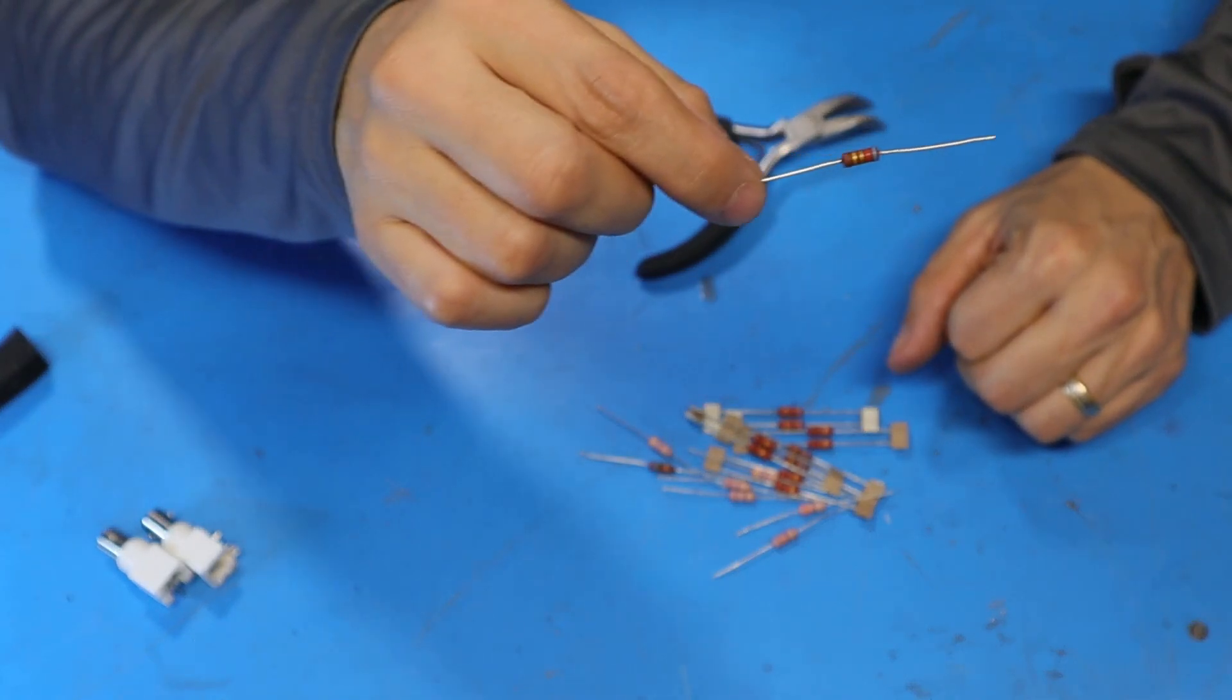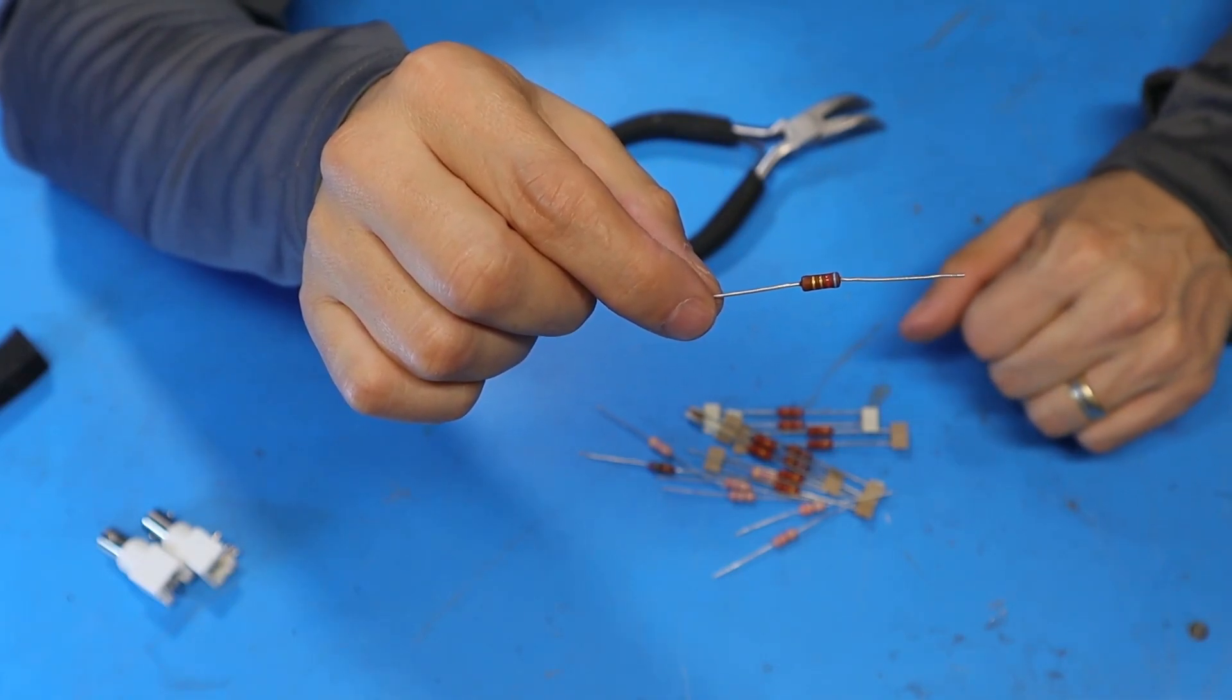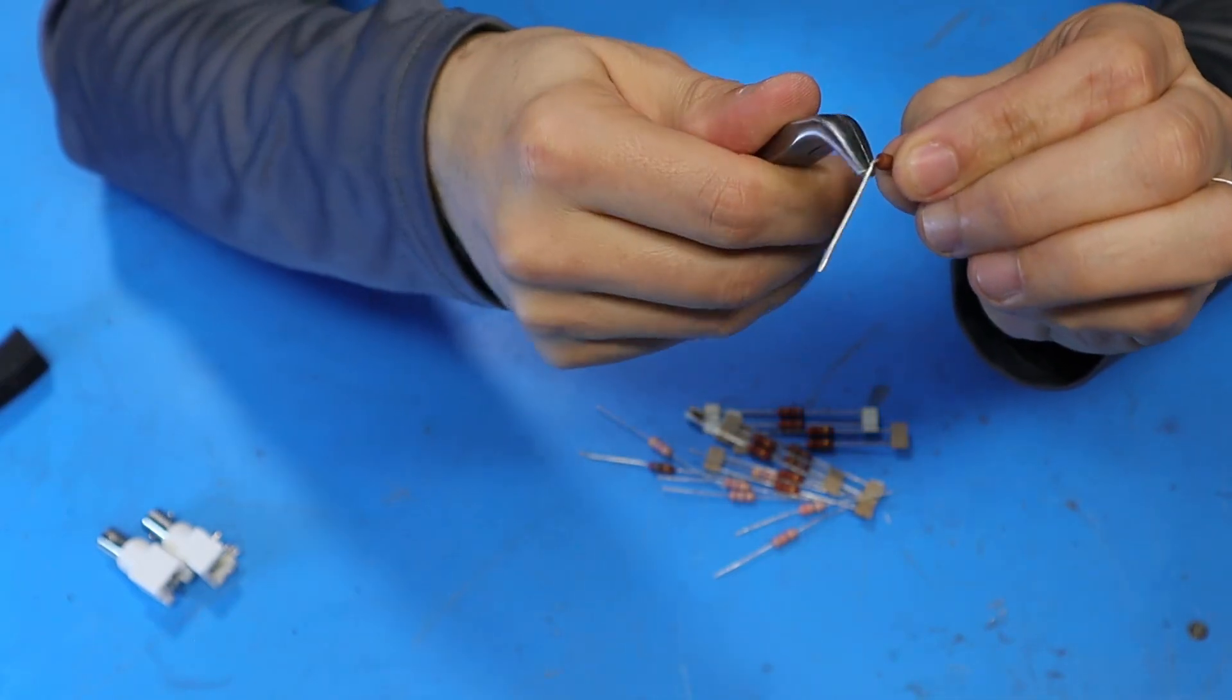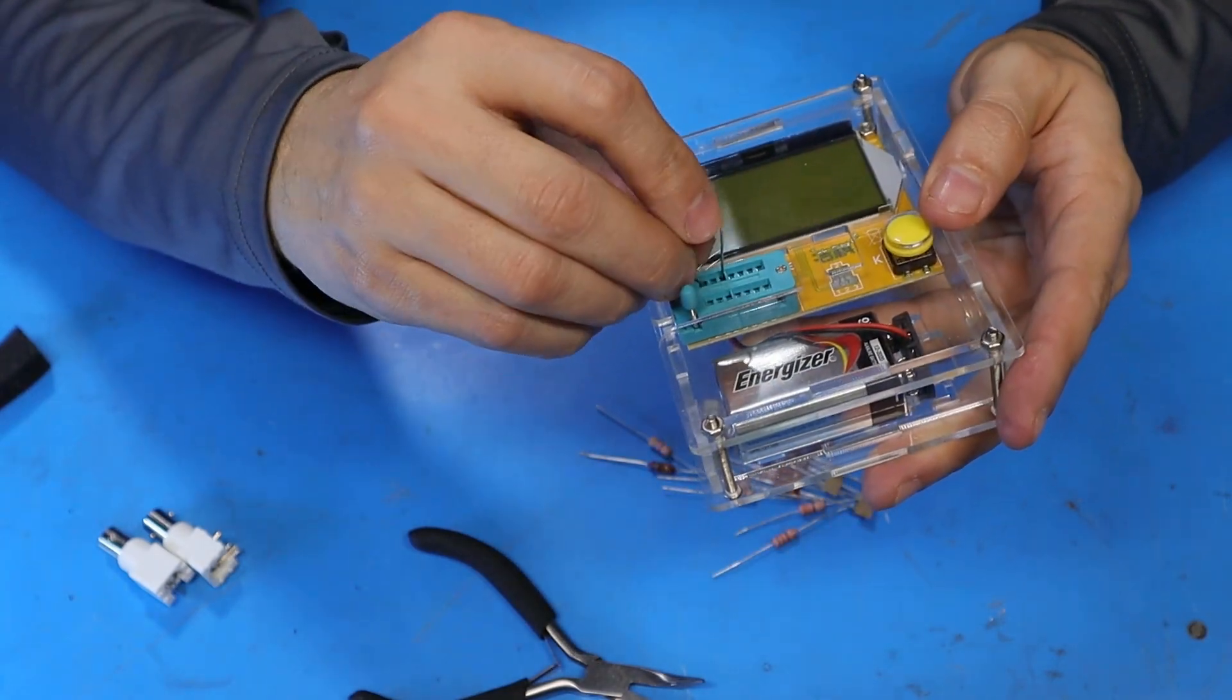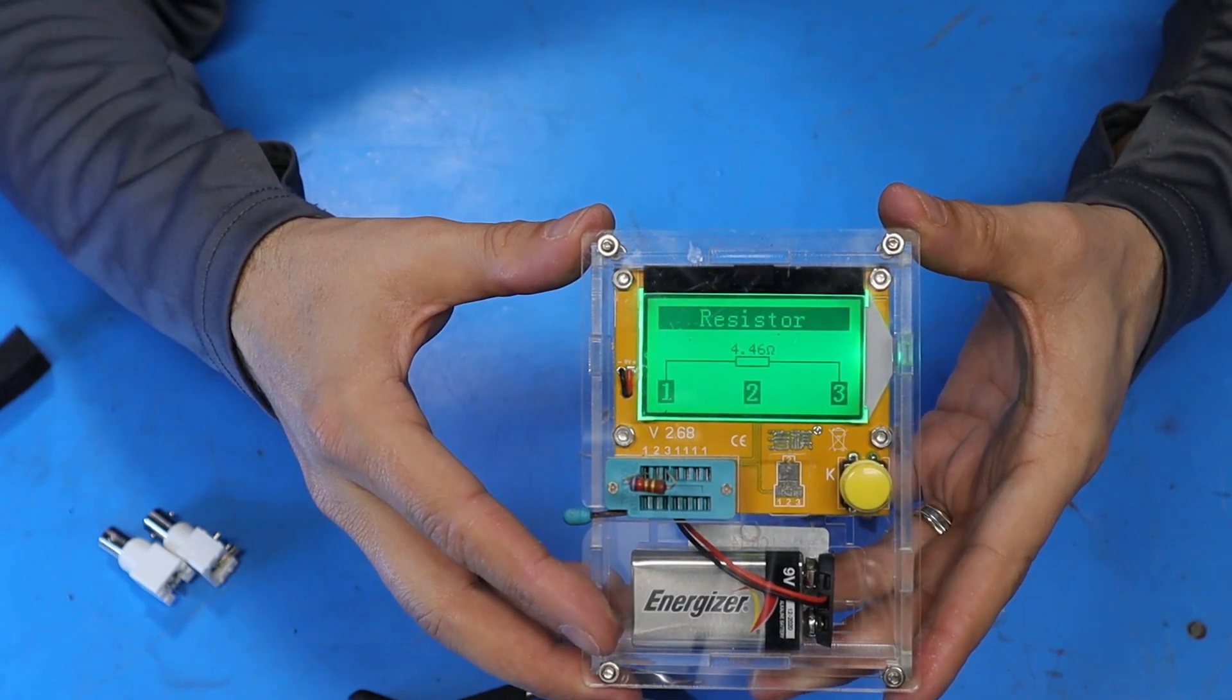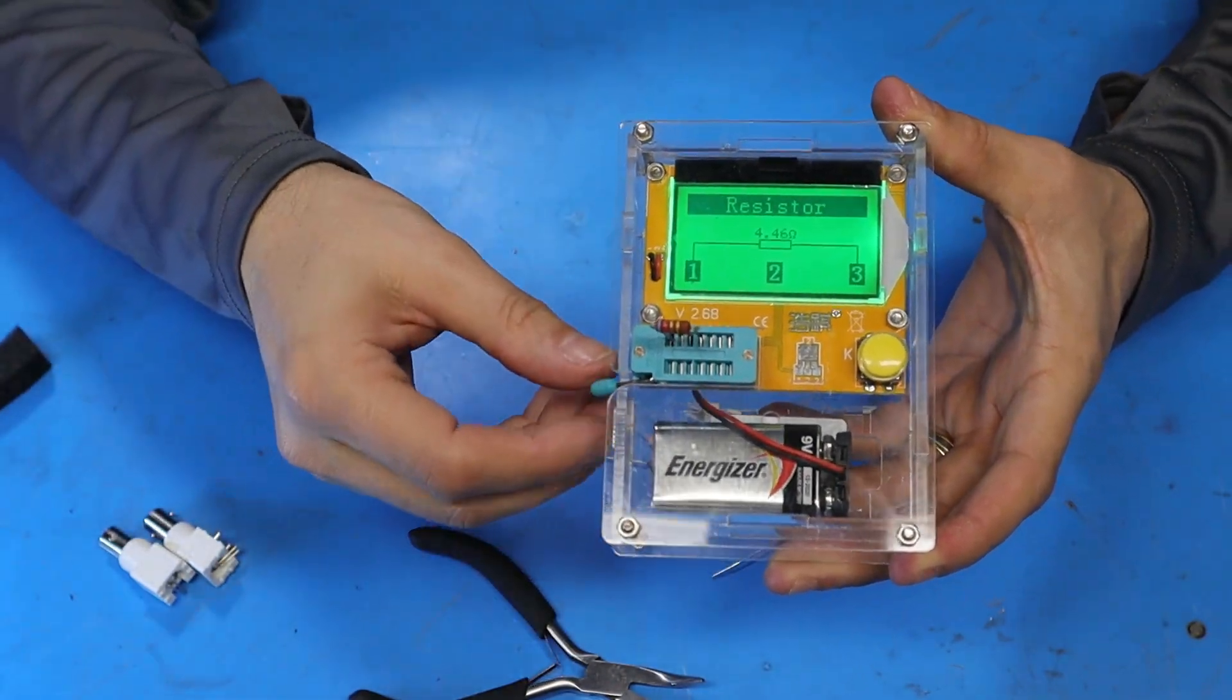The color code on here is blue red gold gold which indicates 6.2 ohms plus or minus 5% tolerance. I'll use these pliers to put a nice bend on these leads. Now I'll use my component tester to double check the value. This resistor is measuring 4.48 ohms which is actually a little bit low. I don't have another one in stock so we're gonna use this one anyway. Should be close enough for what we're doing here.